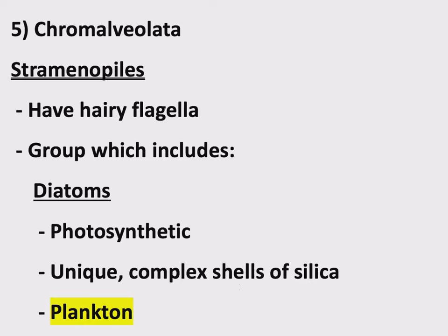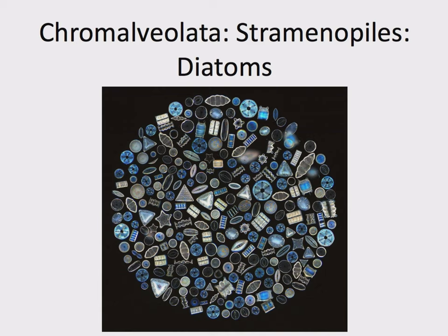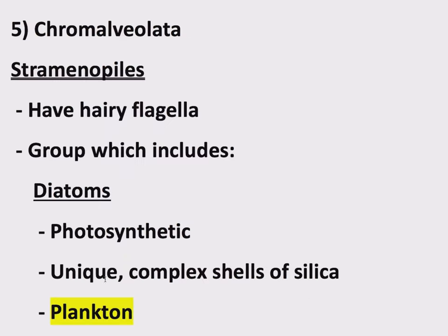As a fun side note for those into crime drama: these shells are so unique that different bodies of water have different populations of diatoms with different unique shapes. There have been, in TV shows but also in real life, cases where a victim's body was found drowned, and they looked at the diatoms in the lungs and found that this person must have been drowned in a specific lake because the diatoms from that lake had these unique shapes. So that's just a fun side note, but there are unique complex shells of silica associated with these photosynthetic diatoms.